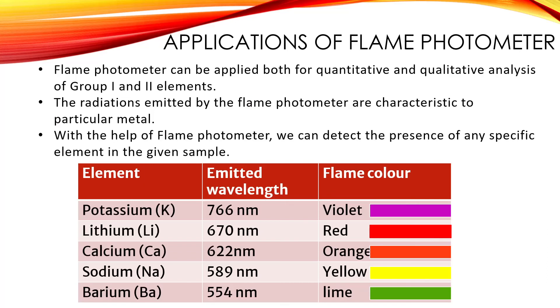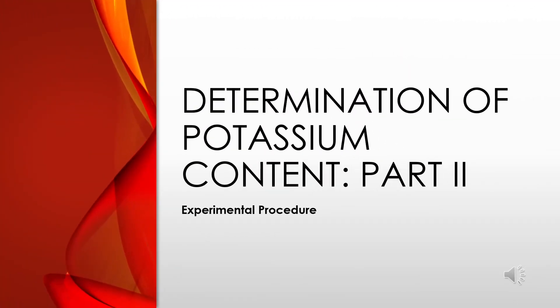For example, if our sample contains lithium, then the emitted wavelength will be around 670 nanometers, and we will observe the color of the flame as red. So in other words, if a red colored flame is observed, we can say that our sample contains lithium. Now, how to carry out quantitative analysis using flame photometry — that we will see with the example of determination of potassium content in fertilizer in the next video.